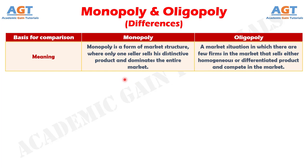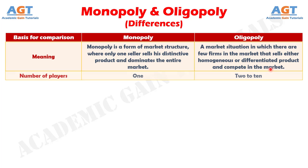Difference No. 1: Monopoly is a form of market structure where only one seller sells his distinctive product and dominates the entire market, whereas a market situation in which there are few firms in the market that sells either homogeneous or differentiated product and compete in the market. In a Monopoly, there is only one player in the entire market, but in Oligopoly, the range of players is 2 to 10 in the market.